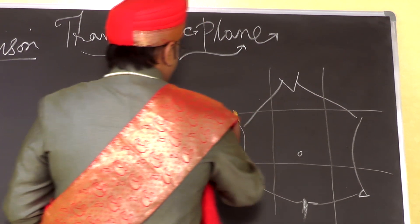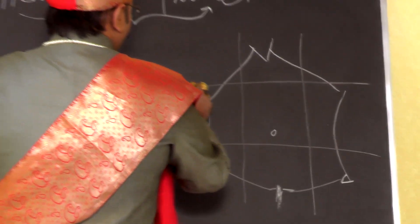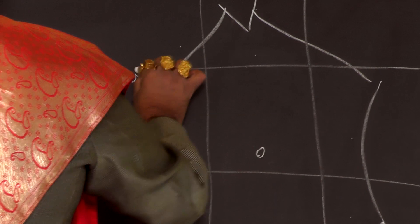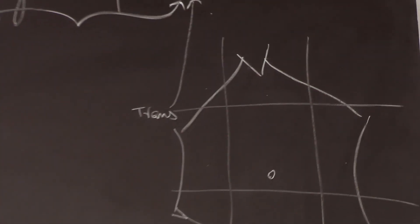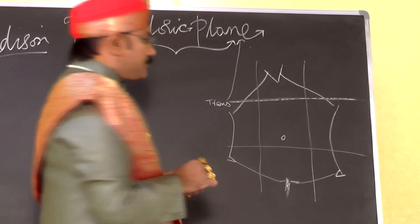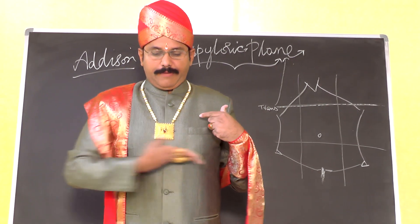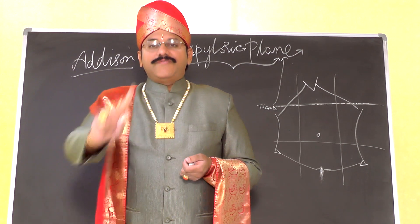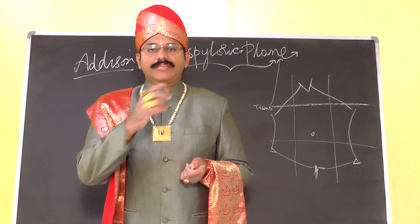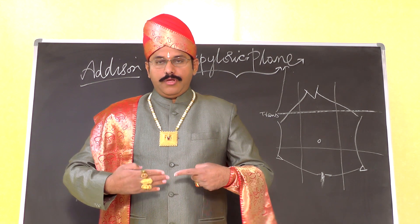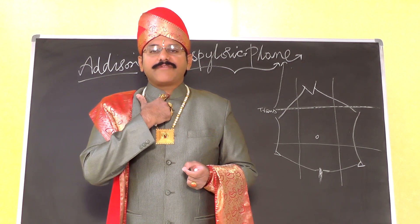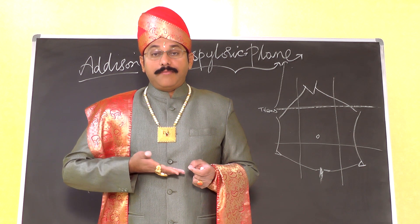This upper horizontal line is called the transpyloric plane. To draw the transpyloric plane on the body, you first feel the suprasternal notch and reach the pubic symphysis. Take the midpoint between the suprasternal notch and the pubic symphysis and draw a horizontal line there.